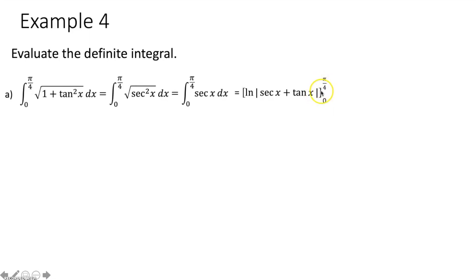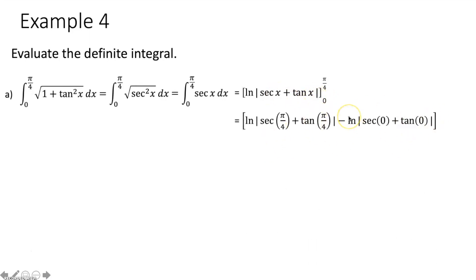Using the Fundamental Theorem of Calculus, take the upper limit of integration, plug it in for x, then subtract the result with the lower limit 0 plugged in for x. Plug everything into your calculator. The integral from 0 to π/4 of √(1 + tan² x) dx is approximately equal to 0.881. Always round to three decimal places — the nearest thousandth — when answering a calculator question on the AP test.